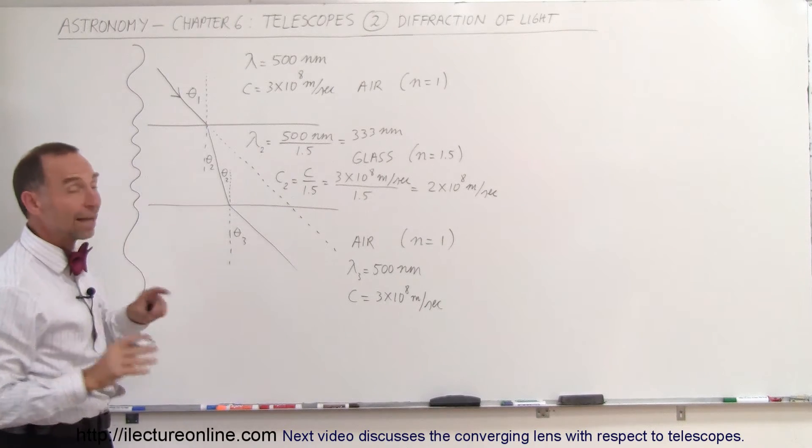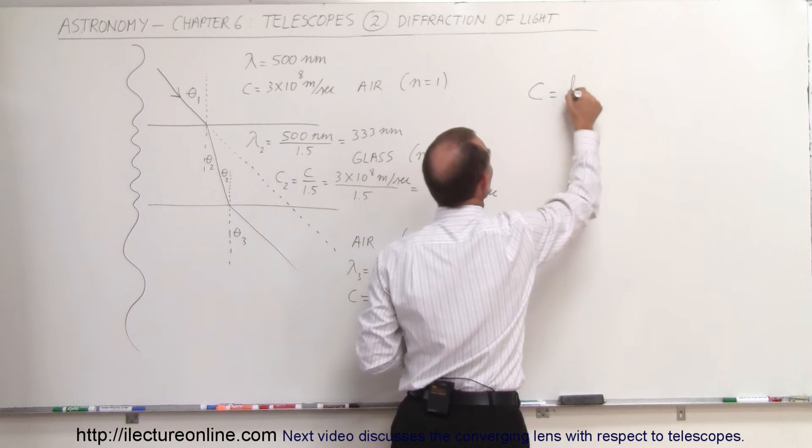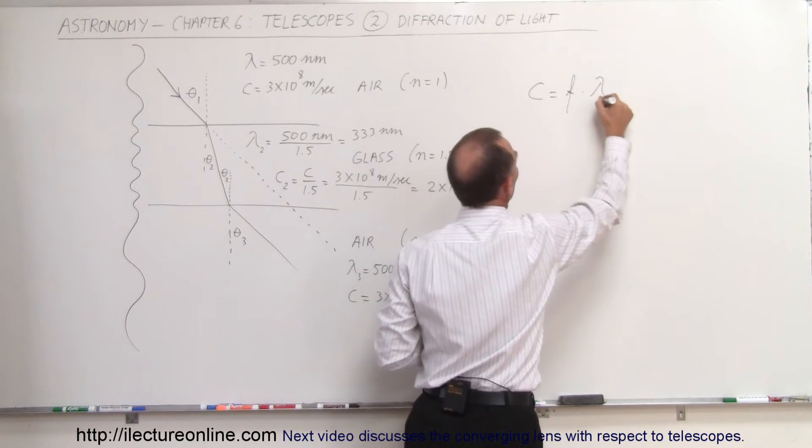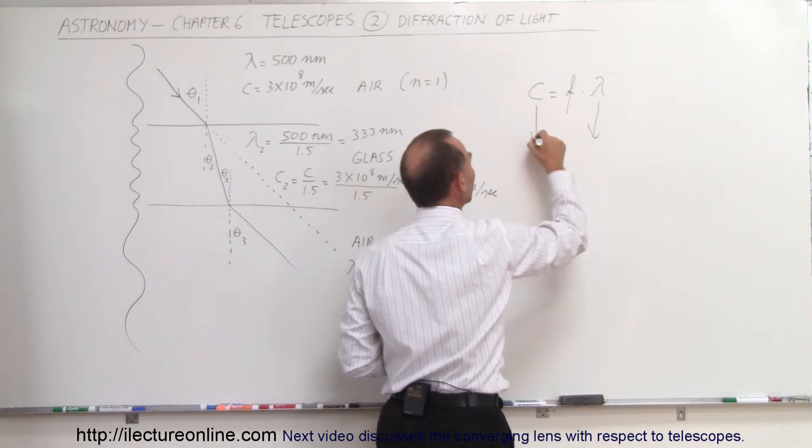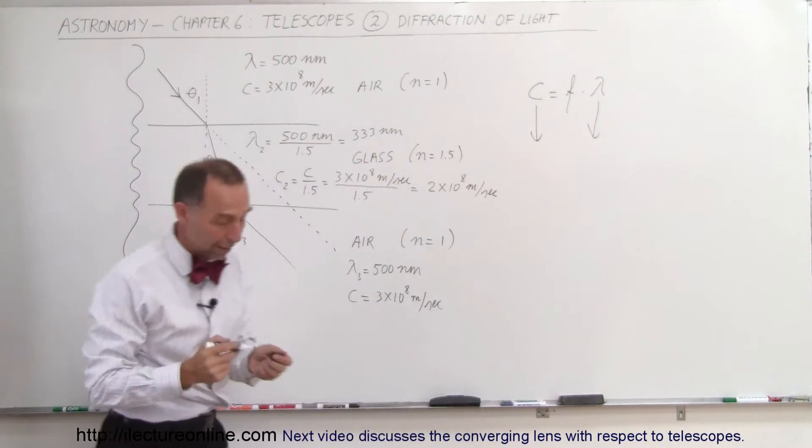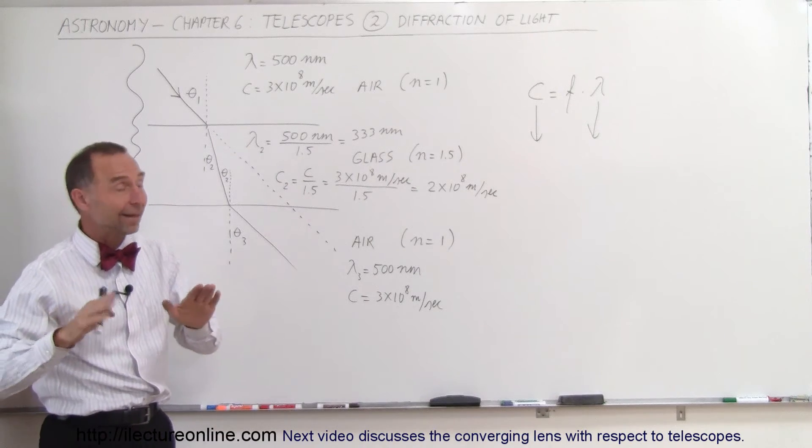Since the frequency of the light doesn't change, and remember that the speed of light equals the frequency times the wavelength, if the wavelength becomes smaller and the frequency stays the same, then the speed has to become smaller as well. And here you say, well, wait a minute, isn't the speed of light always the speed of light? Yes, it is.